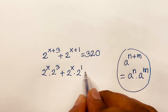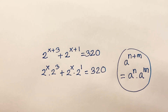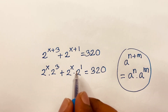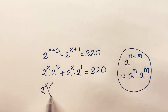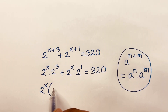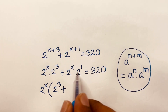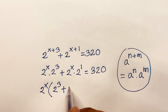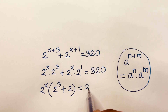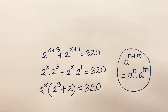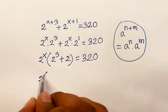This is equal to 320. Now, 2 to the power x is common, so we factor it out: 2 to the power x times, in brackets, 2 to the power 3 plus 2 to the power 1, is equal to 320.